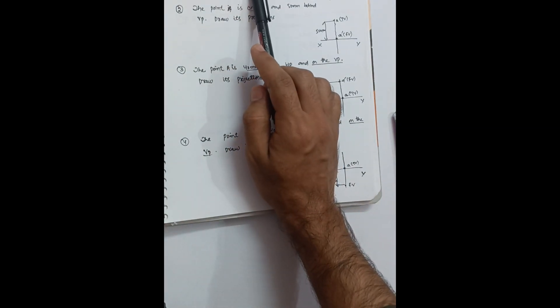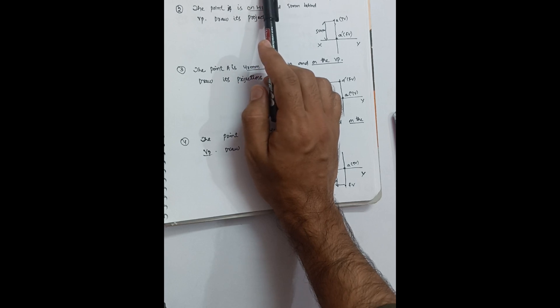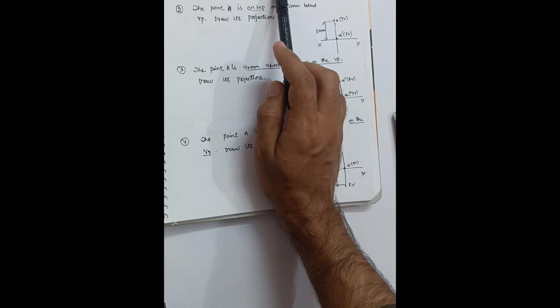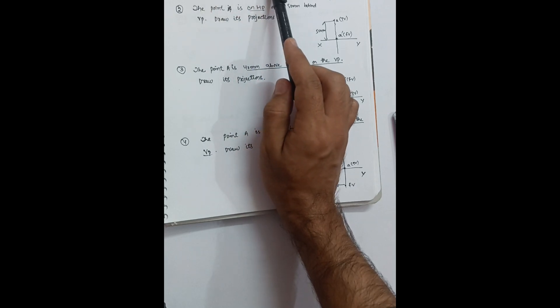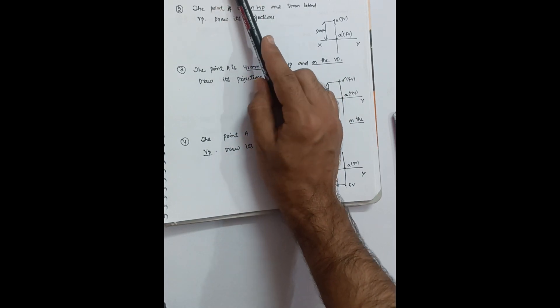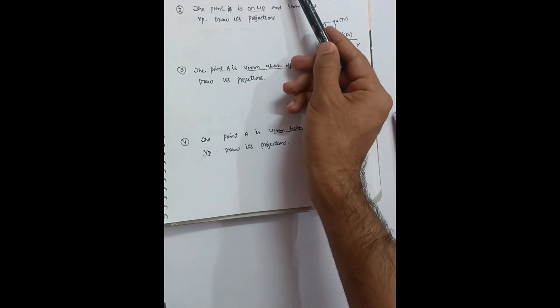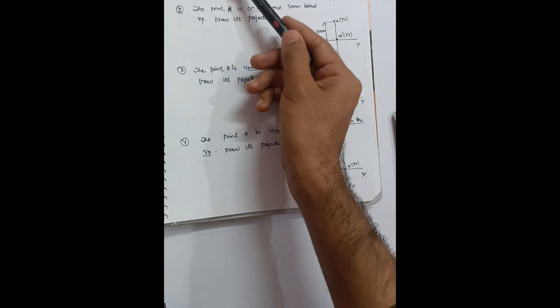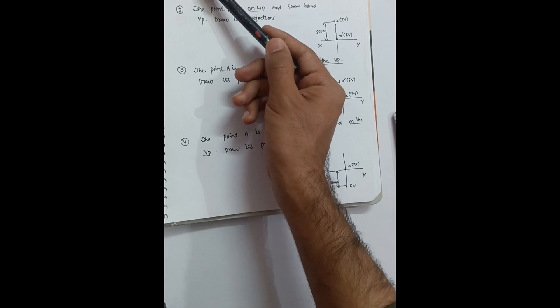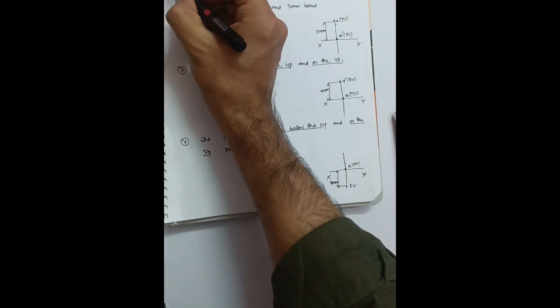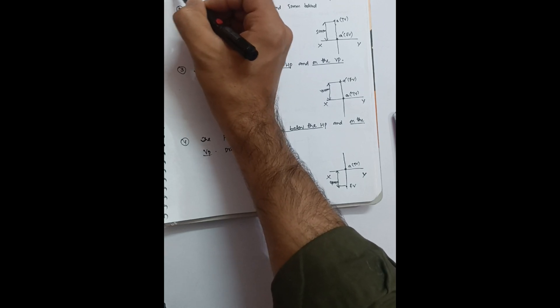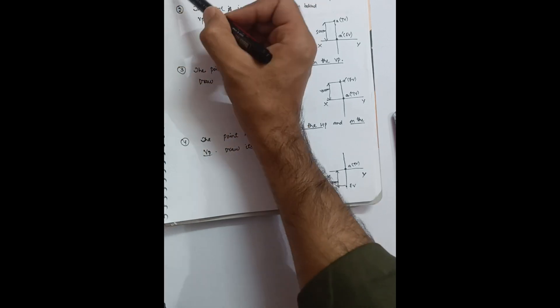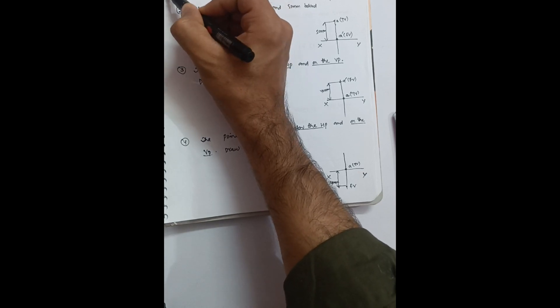These four problems are simple once you practice. The most important thing is to remember the terminologies. Let me recap: whenever the relationship of a point is with HP, you draw the front view; whenever the relationship of a point is with VP, you draw the top view. Think of these as your memory capsule. I hope this is clear — please share this video with those who need it. Thanks for watching!